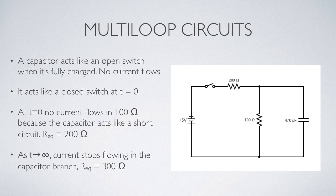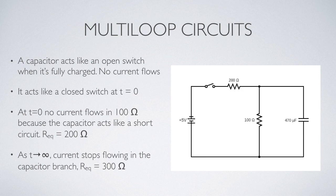We've looked at simple single-loop circuits, but what happens with capacitors and resistors in a multi-loop circuit? When a capacitor becomes fully charged, no current flows in the branch containing it — the electric field inside repels additional charges. So after a long period of time, a capacitor acts like a break in the circuit, or an open switch. Conversely, at t equals zero there is no electric field in the capacitor to prevent current flow, so the capacitor branch initially acts like a short circuit or a wire.